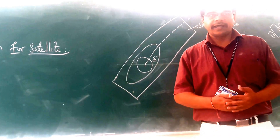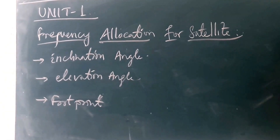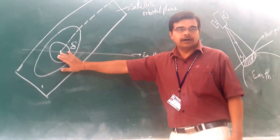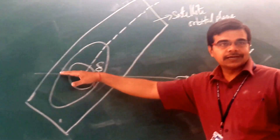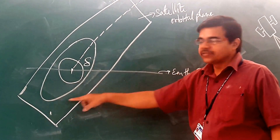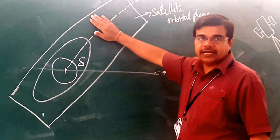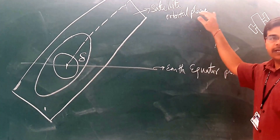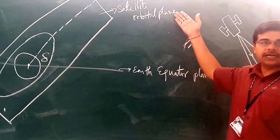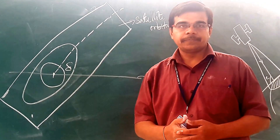The first parameter is inclination angle. Here you can see this is the arc equator and this is the orbit of the satellite. Considering this as your equatorial plane and this as your satellite orbital plane, the angle between your satellite orbital plane and the equatorial plane is called the inclination angle.